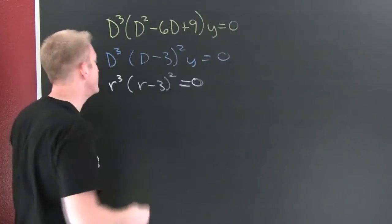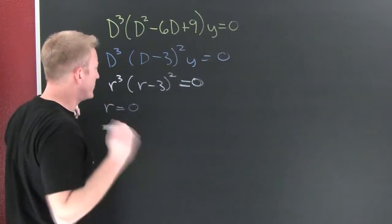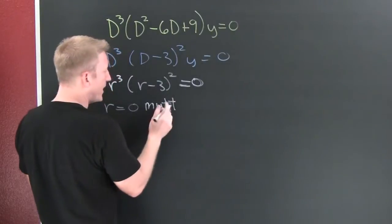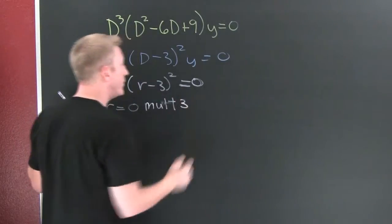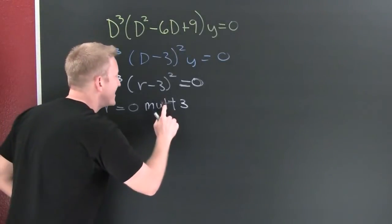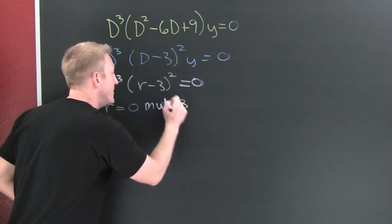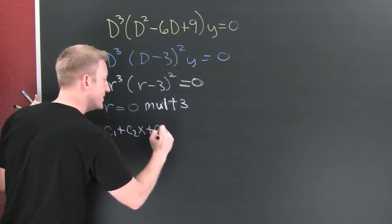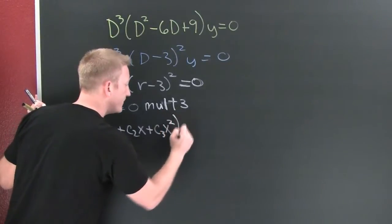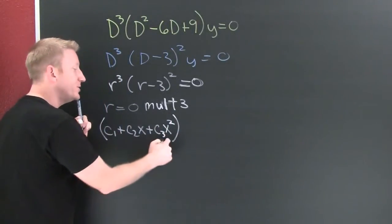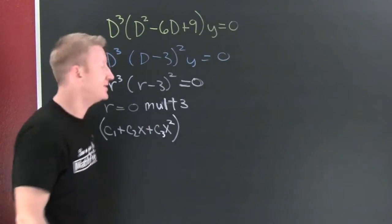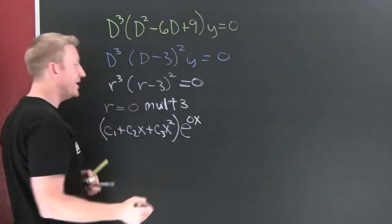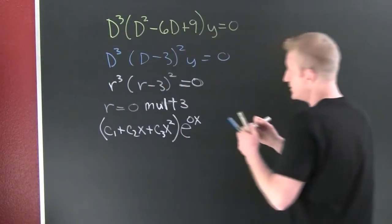We see that r equals zero — what's that multiplicity? It occurs three times, so multiplicity three. That gives us c1 plus c2·x plus c3·x squared. From our definition we need to attach these extra solutions for independence of our general solution. This is e to the zero.